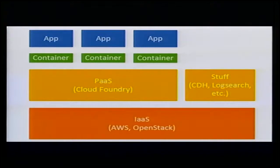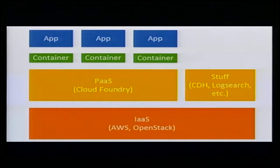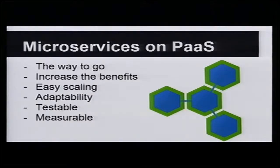PaaS runs containers, and within those containers you have your apps and microservices. Besides that, on your cloud instance you can have other services like CDH (Cloudera Hadoop deployment), log search, and large clusters like Elasticsearch that are too heavy to run within a single Docker container. When you do microservices on PaaS, it makes everything better — it really seems like the way to go.